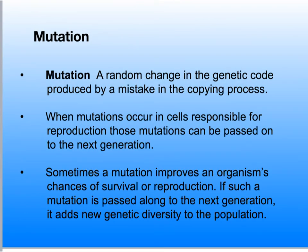DNA is copied millions of times during an organism's lifetime as cells grow and divide. On occasion, mistakes in this copying process can happen, producing a random change in the genetic code — we call that a mutation. Environmental factors like ultraviolet radiation from the sun and certain chemical exposures can also cause mutations. When a mutation occurs in cells responsible for reproduction, like egg and sperm cells, those mutations can be passed to the next generation. Most mutations aren't detrimental to an organism, but sometimes if a mutation reflects on a phenotype that causes a problem in the way the species lives, then this mutation can have a negative impact.